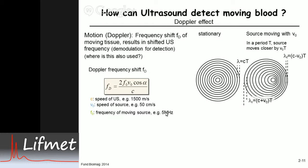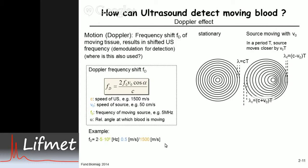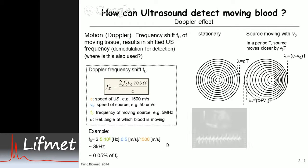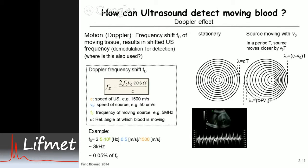For this example, the ultrasound frequency is 5 megahertz. Plugging in the factor of 2, the velocity of half a meter per second, and the wave propagation velocity, you get a Doppler frequency shift of 3 kilohertz. That's only 0.05% of the ultrasound frequency — a small shift — but the good news is that with today's electronics and demodulation, a 3 kilohertz shift is easily measurable.